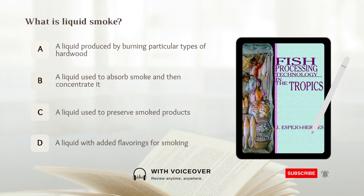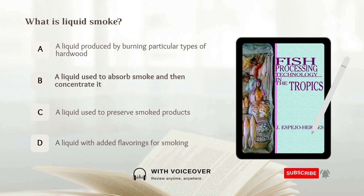What is liquid smoke? A. A liquid produced by burning particular types of hardwood. B. A liquid used to absorb smoke and then concentrate it. C. A liquid used to preserve smoked products. D. A liquid with added flavorings for smoking. Answer: B. A liquid used to absorb smoke and then concentrate it.